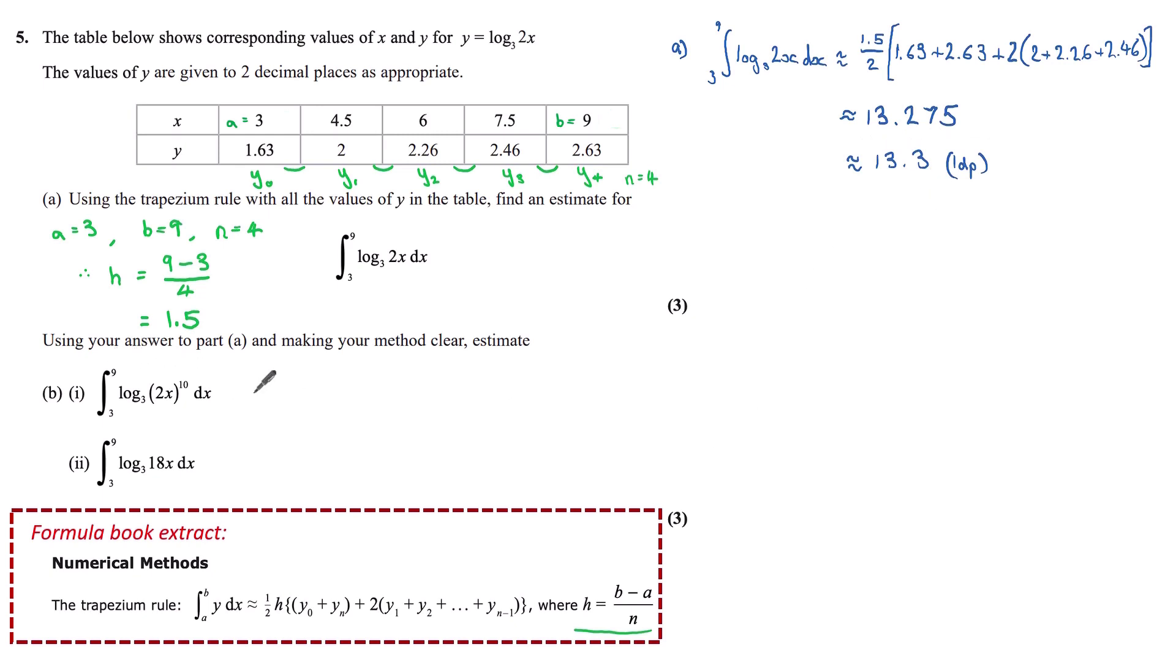Using our answer to part a and making our method clear, estimate the integral of log base 3 of 2x to the power 10 dx. Now we're going to go back, as we did in question 1 of this paper, to our log rule. This log rule states that log a to the power b is the same as b log a, bringing that power to the front.